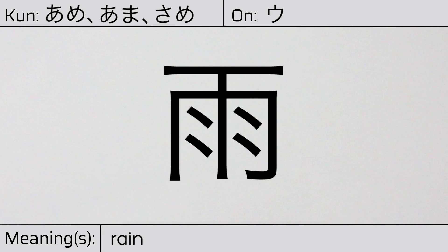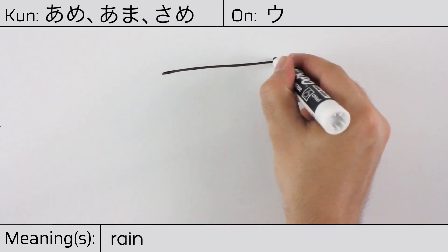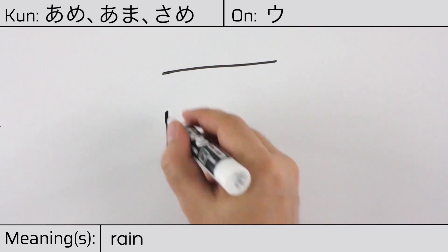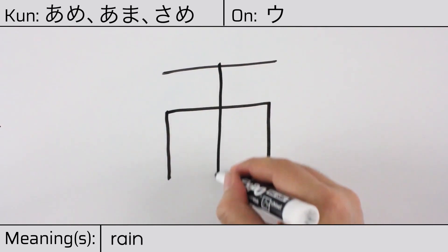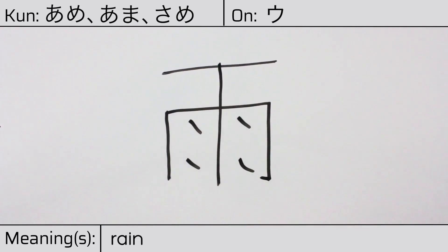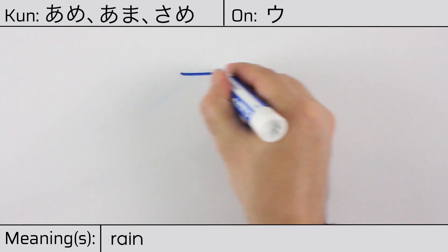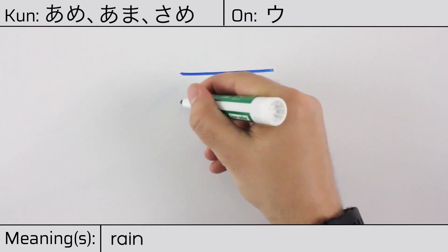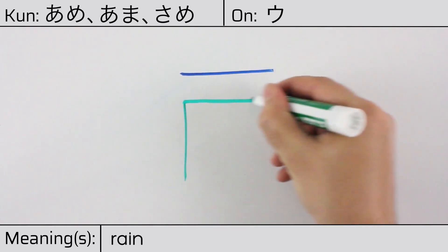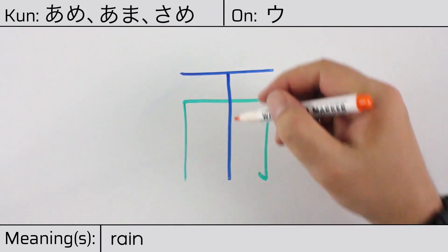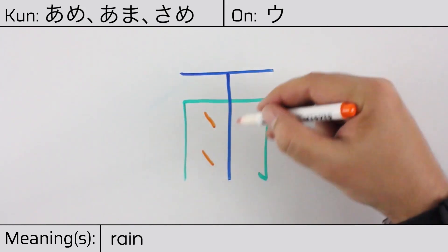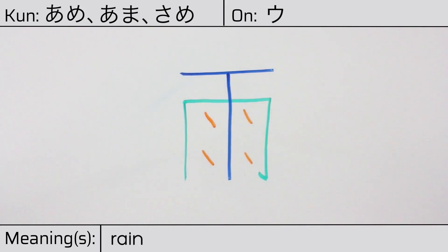Here is the stroke order: ichi, ni, san, shi, ten, ten, ten, ten, ten. This character is made up of the following radicals or parts: a single horizontal stroke on top, the enclosure radical, a single vertical line, then four ten or dots, which typically represent water.